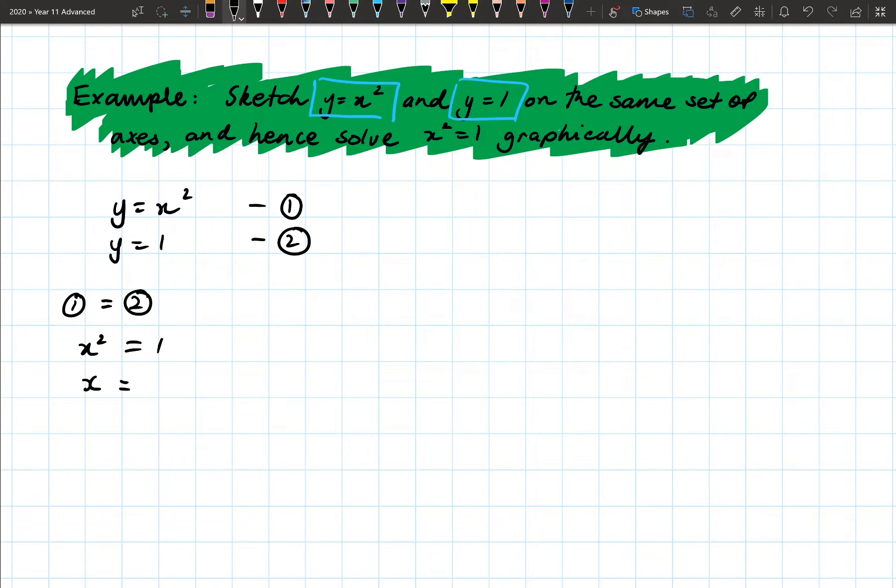We can actually solve this using simultaneous equations. I'm going to do it quickly here. So I've got my two equations. If you notice y is already subject, so I'm going to use the substitution method and go one equals two. So I'm going to equate the two. So I'm going to have x squared equals one.